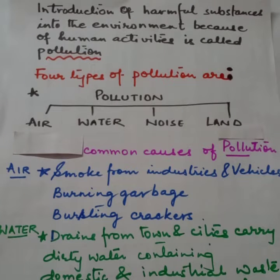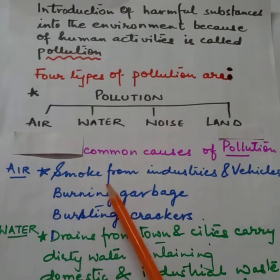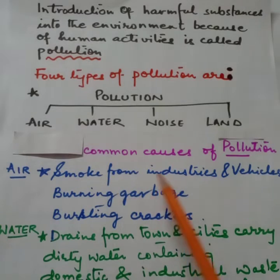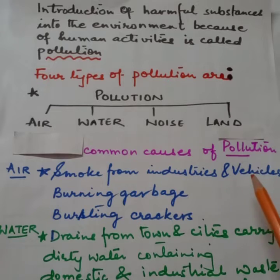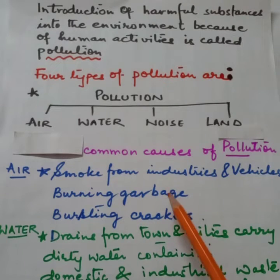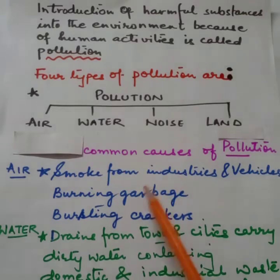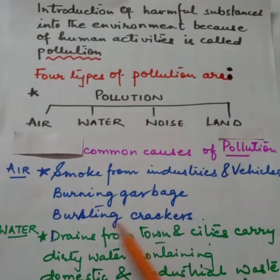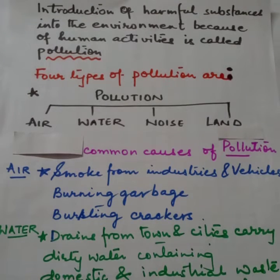Common causes of pollution — किससे pollution होता है? Air pollution होता है smoke से, जो कि industries, factories और गाड़ियों से निकलती हैं। कचरा जलाने से धुआं होता है। Bursting crackers — पटाके फूटने से जो धुआं होता है, उससे air pollution होता है।